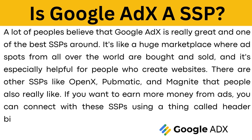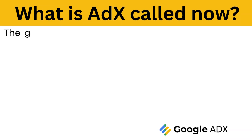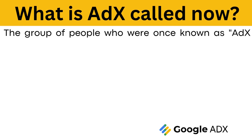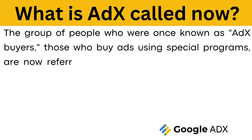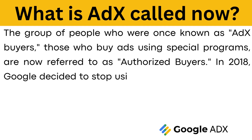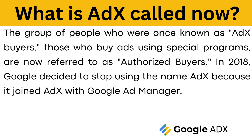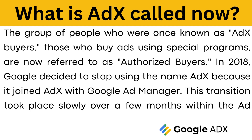If you want to earn money from ads, you can connect with these SSPs using header bidding. What is AdX called now? The group of people who were once known as AdX buyers — those who buy ads using special programs — are now referred to as authorized buyers. In 2018, Google decided to stop using the name AdX because it joined AdX with Google Ad Manager. This transition took place slowly over a few months within the Ad Manager's user interface.